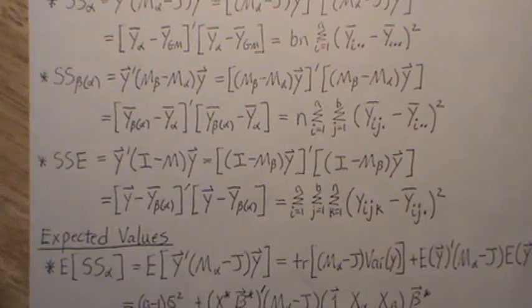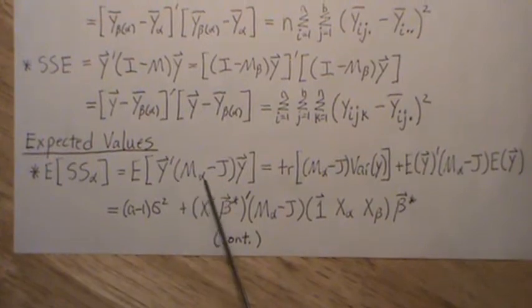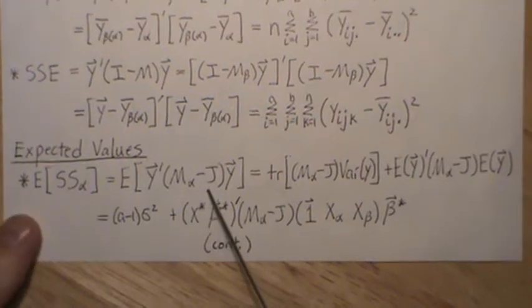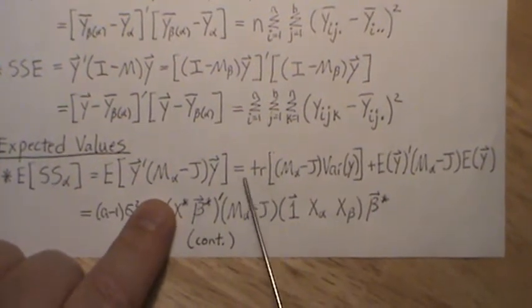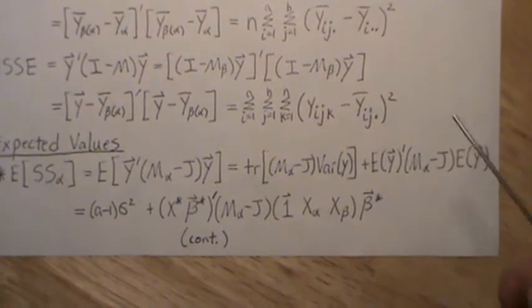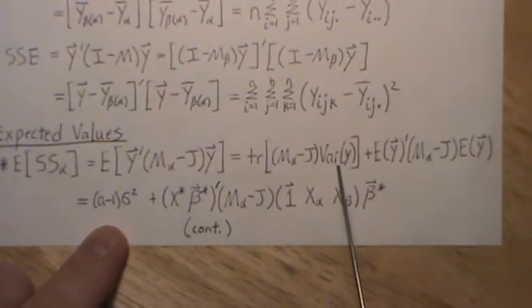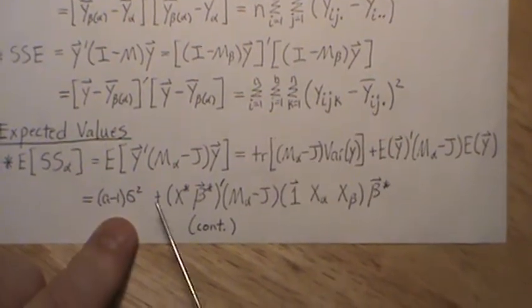Now let's look at the expected values for each of these components. The expected value of the sum of squares for factor A is E[y-transpose times (M_alpha minus J) times y]. I have a playlist called Quadratic Forms with a video on the mean, variance, and covariance of quadratic forms where we derive the formula we use here: the expected value of a quadratic form equals the trace of the matrix times the variance of y, plus the mean of y transpose times that matrix times the mean of y. The variance of y is sigma-squared I, so sigma-squared comes out front, and the trace of (M_alpha minus J) is a minus one.